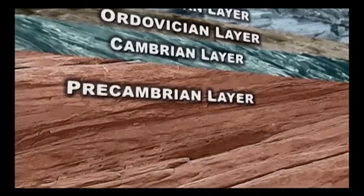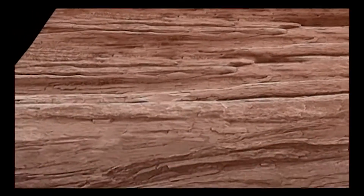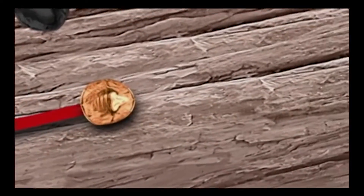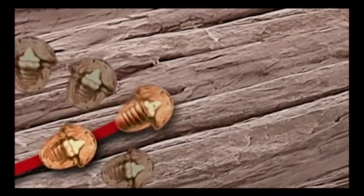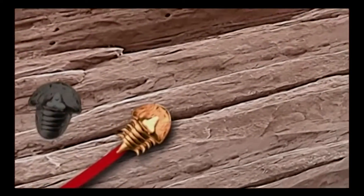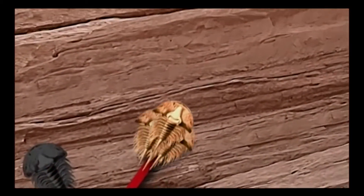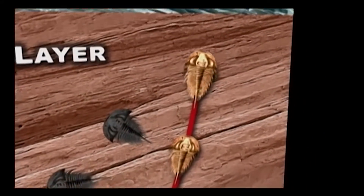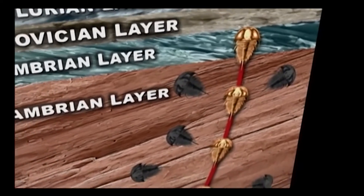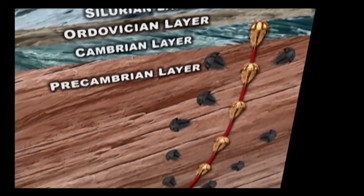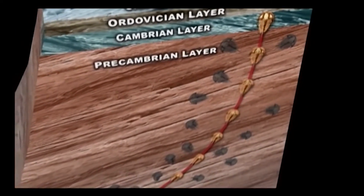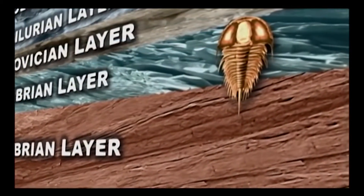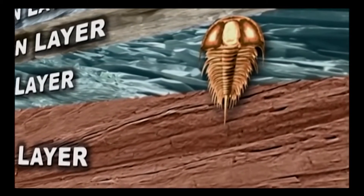Darwin knew that if his theory was true, the older rock strata directly beneath the Cambrian layer should reveal a progression of fossils connecting simple earlier forms to complex animals like trilobites, through a trail of incremental steps and failed biological experiments. Such evidence would document the trial-and-error process of natural selection. But Darwin says in The Origin: where are these transitional forms? They're not there in the fossil record. What we see instead are fully formed discrete groups.